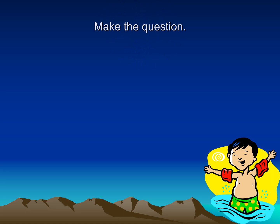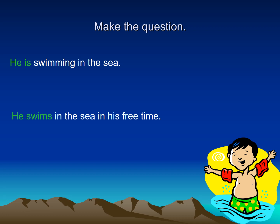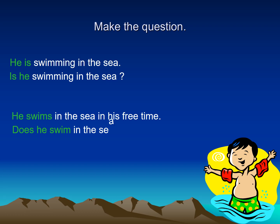What about questions? How can I make the interrogative form? If I have 'he is swimming in the sea', I move 'is' to the front — Is he swimming in the sea? For 'he swims in the sea in his free time', the verb has S so I begin with 'does' and the verb returns to the infinitive — Does he swim in the sea in his free time? I never add S when I use 'does'.